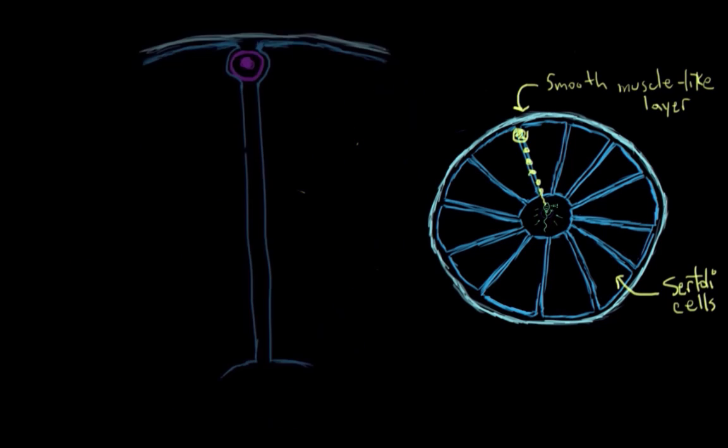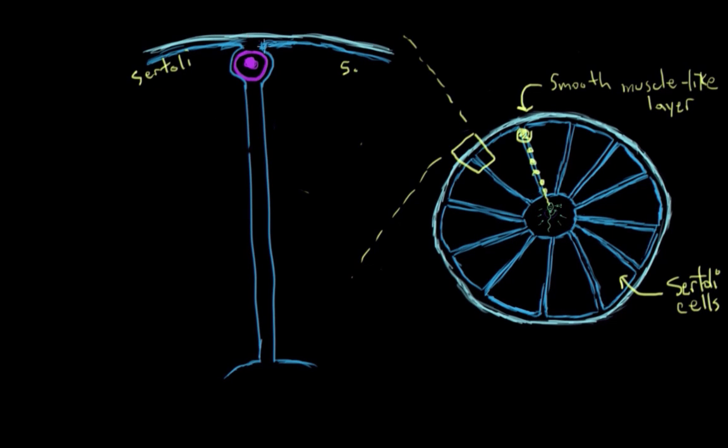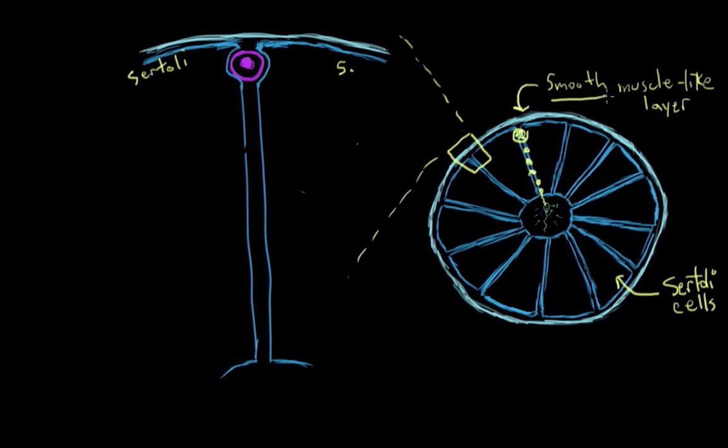We'll zoom in here on this part here. But we really could pick anywhere along these tubes because it's all the same process. Let's say this here is a sertoli cell, and then there's a sertoli cell on the other side. I'll just put S to designate sertoli cell. And that light blue bit up top is that smooth muscle layer that does peristalsis. So this purple cell here, what is that?